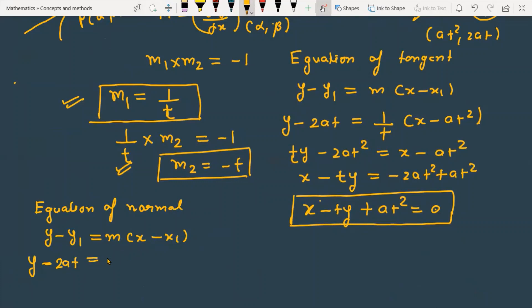Simplifying: tx + y = 2at + at³. So this is the equation of the normal at the given point (at², 2at), and this is the equation of the tangent at the given point.